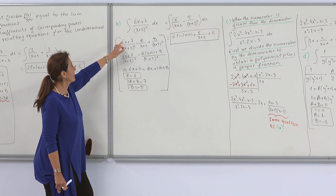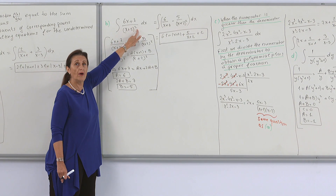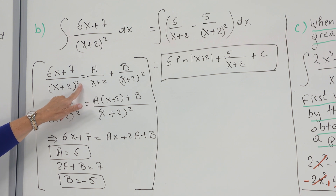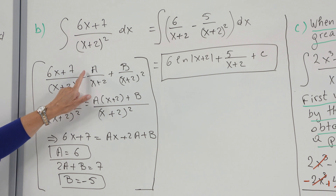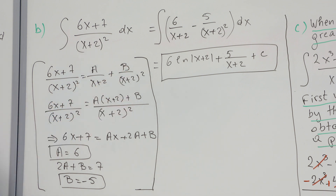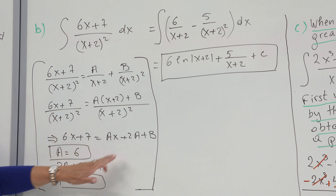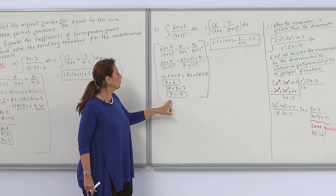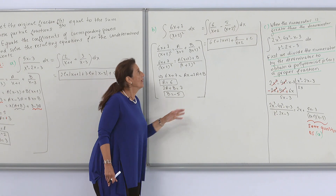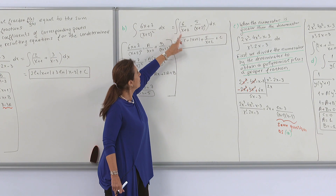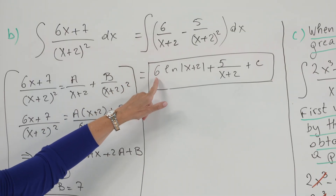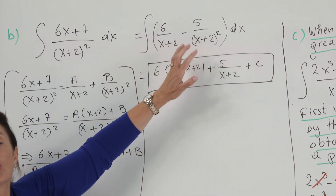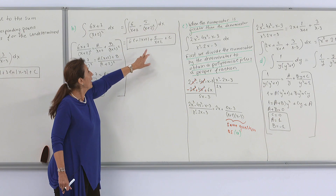Here we have a second example. In this example, the denominator has a real root but with a power of 2, so m equals 2. I set the fraction equal to a over (x plus 2) plus b over (x plus 2)². Equating coefficients of x⁰, I find that a equals 6 and b equals minus 5. I write the integral in this form and solve it: 6 over (x plus 2) integrates to 6 ln|x plus 2|, and the second term integrates like 1 over u, giving minus 1 over (x plus 2).